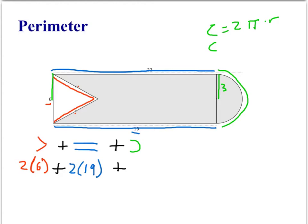So circumference of the whole circle would be 2 pi times 3. In other words, it's 6 pi. However, we don't want a full circle. We just want half of a circle. And so we want half of 6 pi.